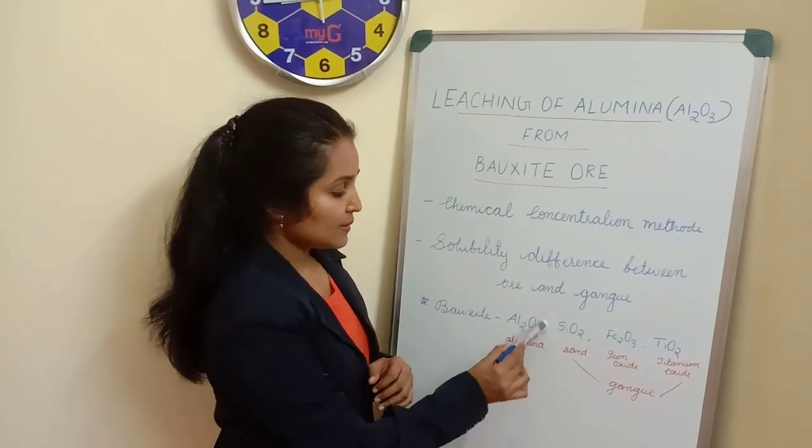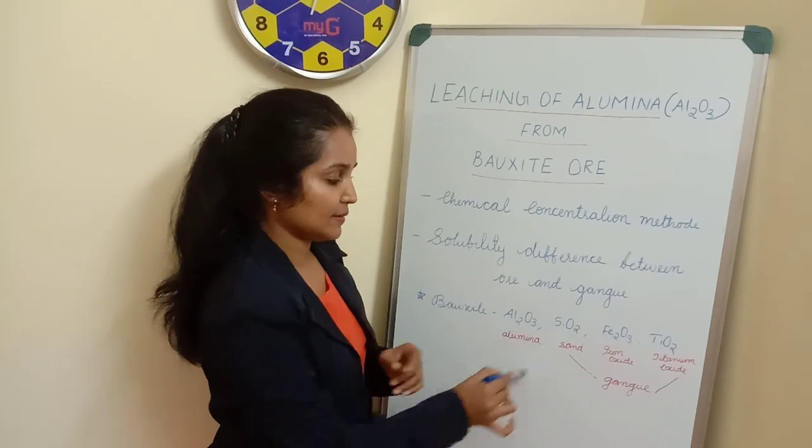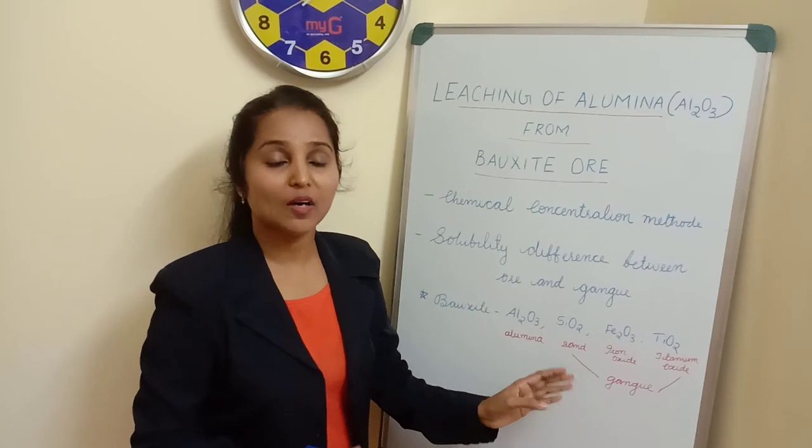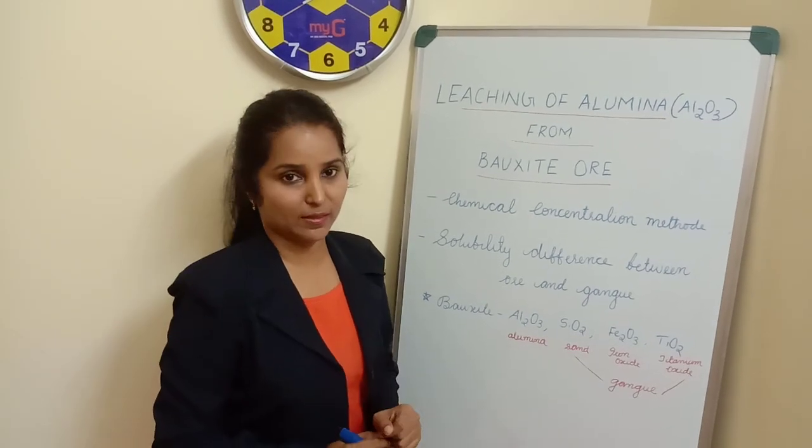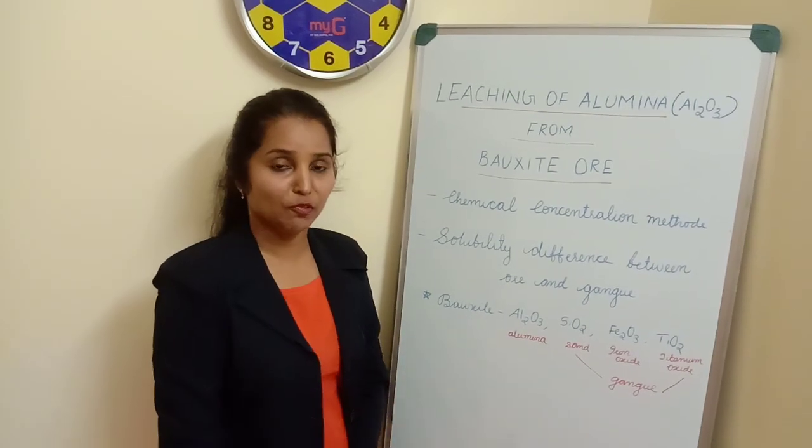Since the alumina is the one that we are going to get concentrated, all the rest are coming under the category of gang or impurities. So, moving to the discussion about the steps involved.